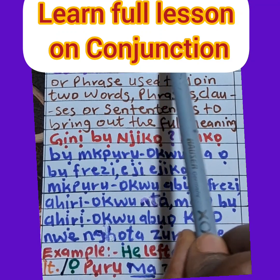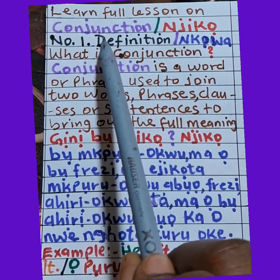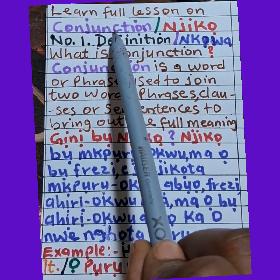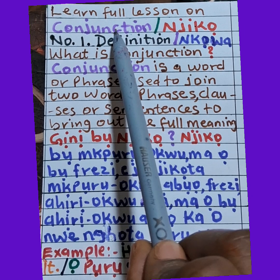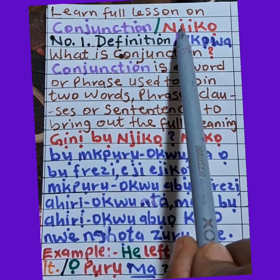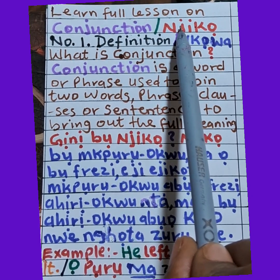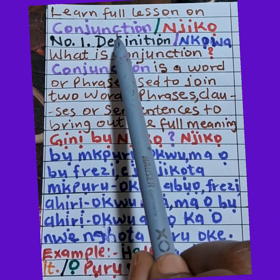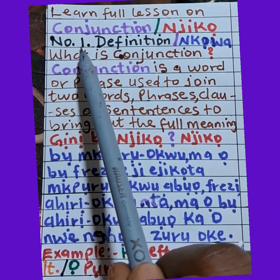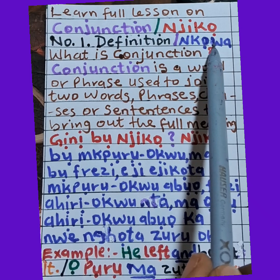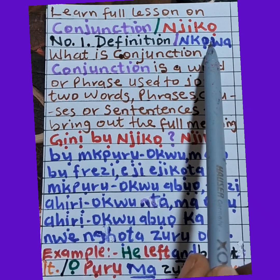Learn the full lesson on conjunction. Inibo, conjunction simply means njiko. We are going to start our lesson on conjunction through definition. Definition means nkowa.